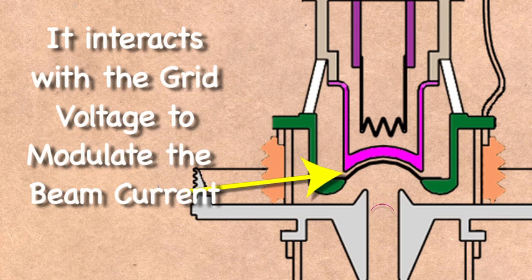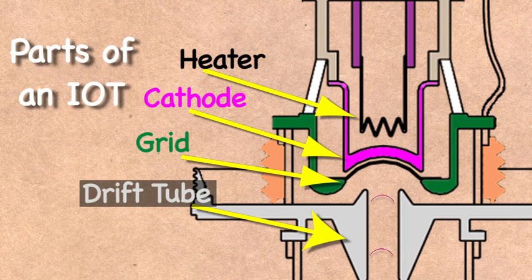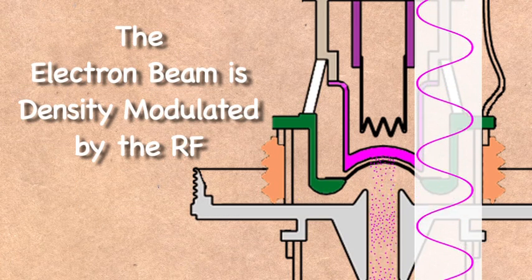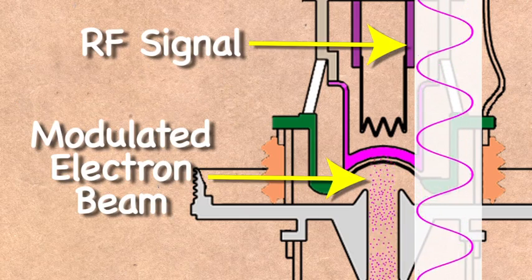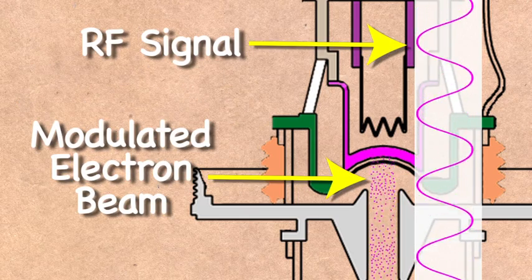As the RF interacts with the grid, it modulates the voltage between the grid and the cathode. In this way, the electron beam becomes density modulated, where the electrons are bunched together in one part and spaced apart in the following section, following the RF input signal.